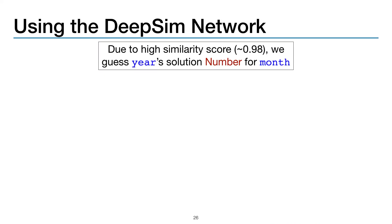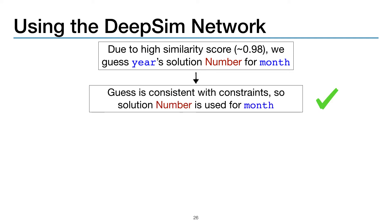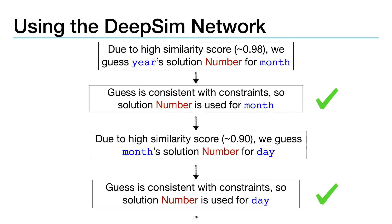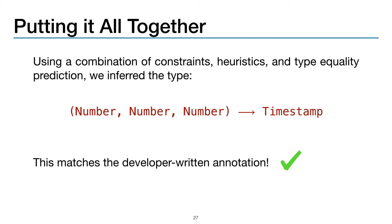With these outputs from the DeepSim network, because we got a high similarity score of about 0.98 between year and month, we guess year's solution — which is number — for the parameter month. This guess turns out to be consistent with the set of constraints, so the solution number is used for the parameter month. Similarly, because we got a high similarity score of about 0.9 between month and day, we guess the solution number for day, and because this is consistent with the constraints, we use number for day as well. Putting this all together, through a combination of constraints, heuristics, and type equality prediction, we inferred the type that matches exactly the developer-written annotation.